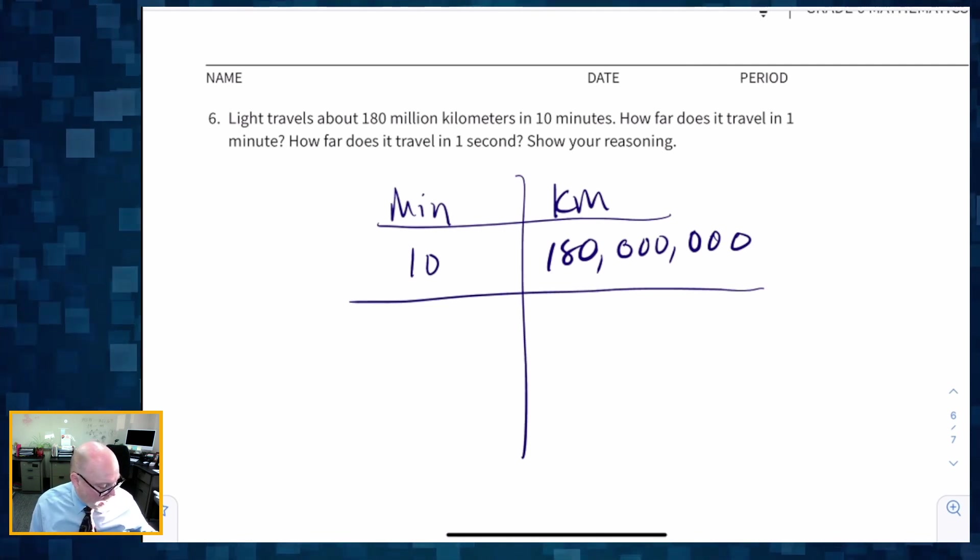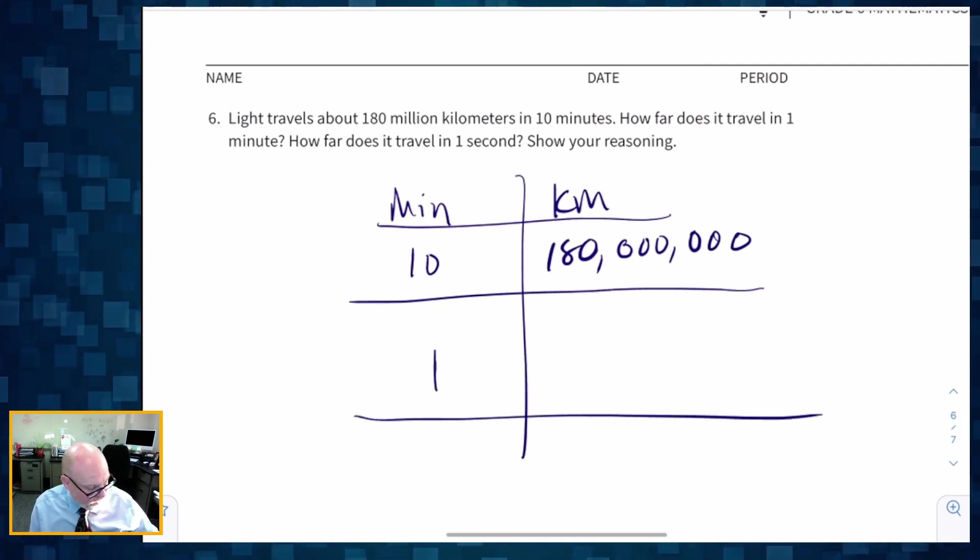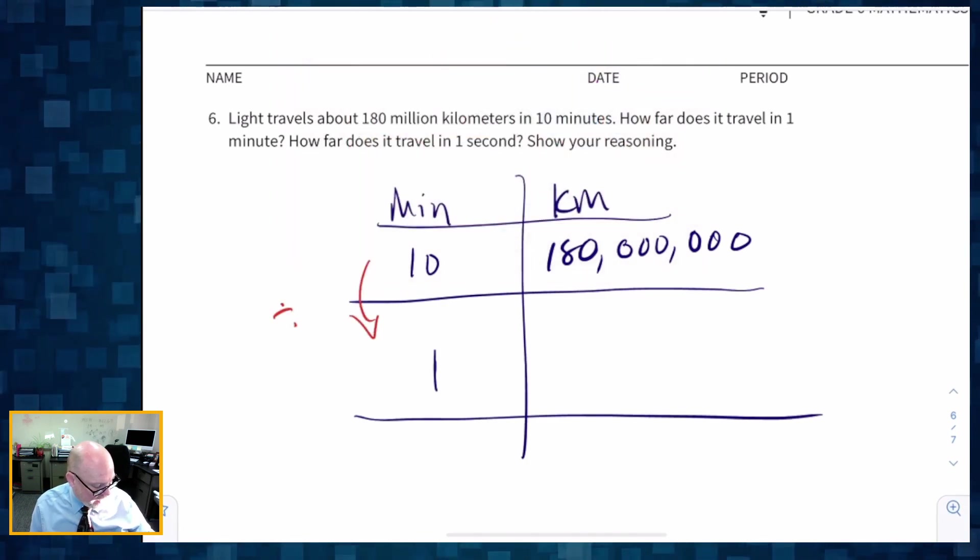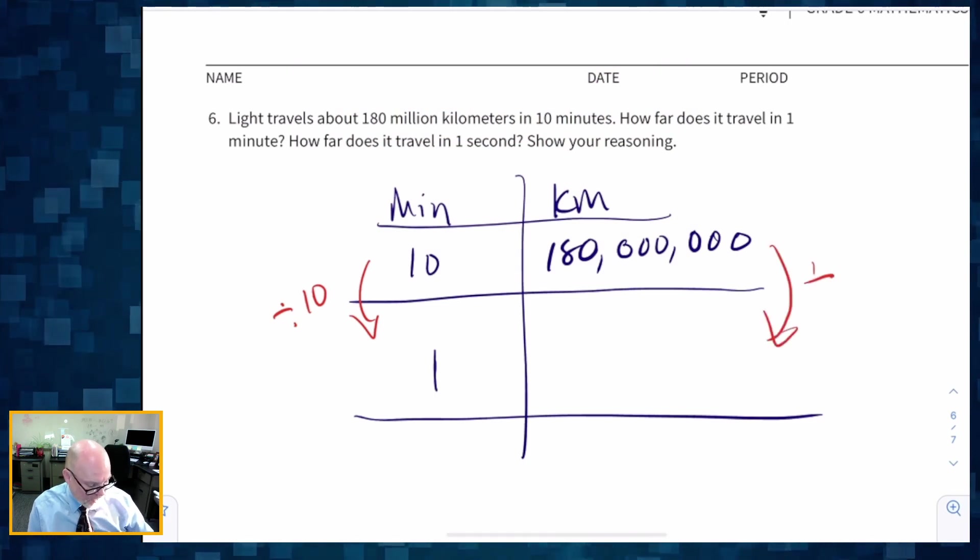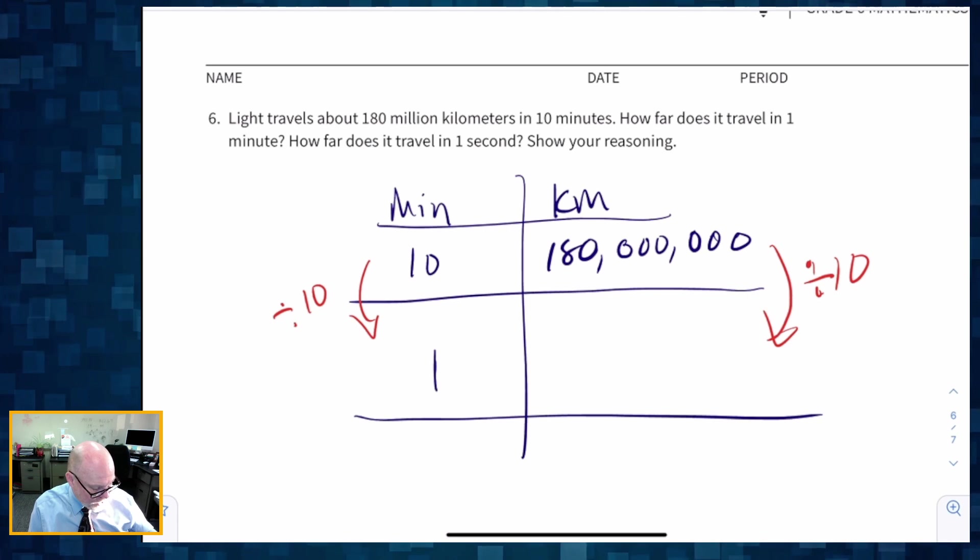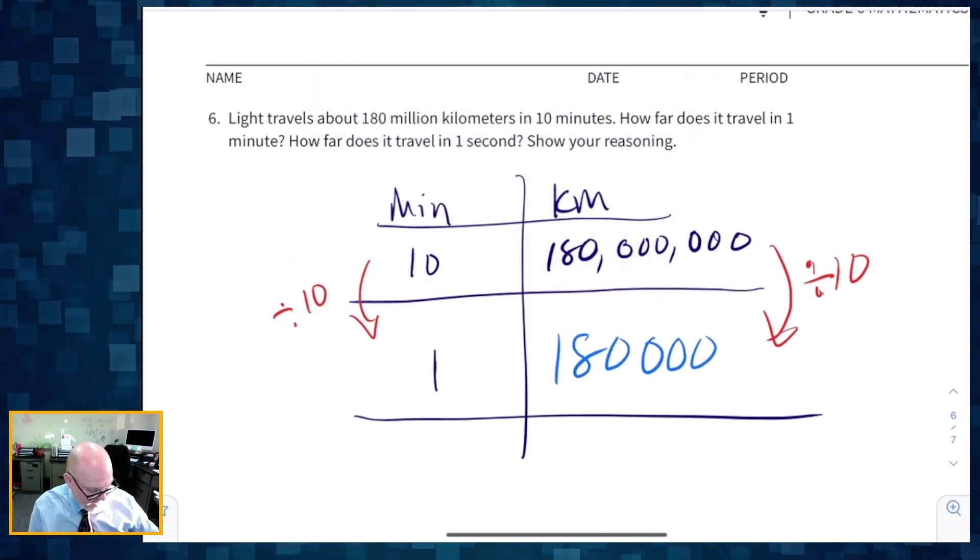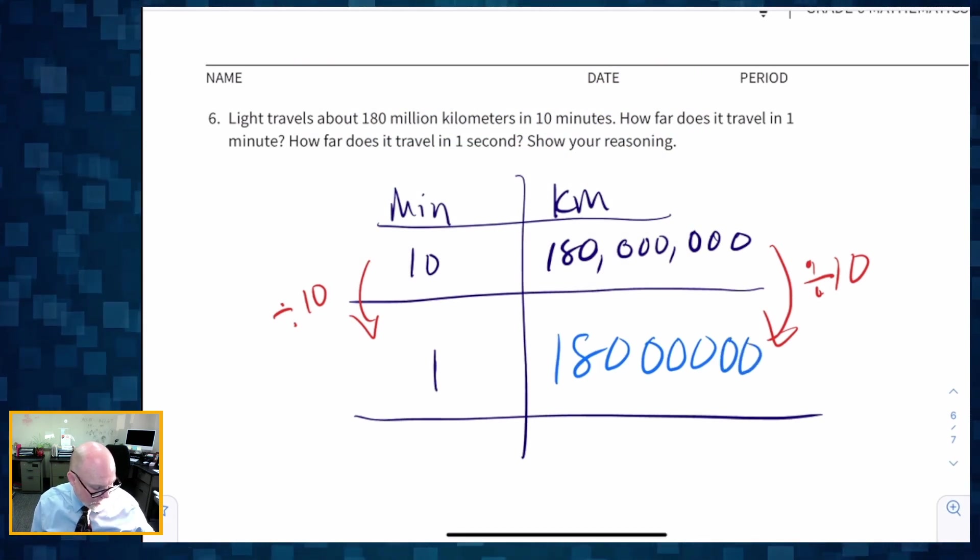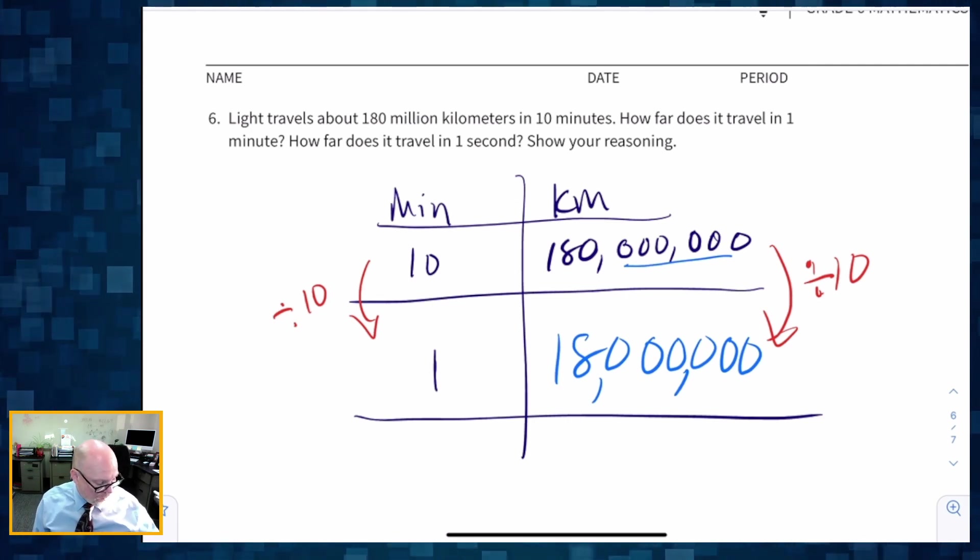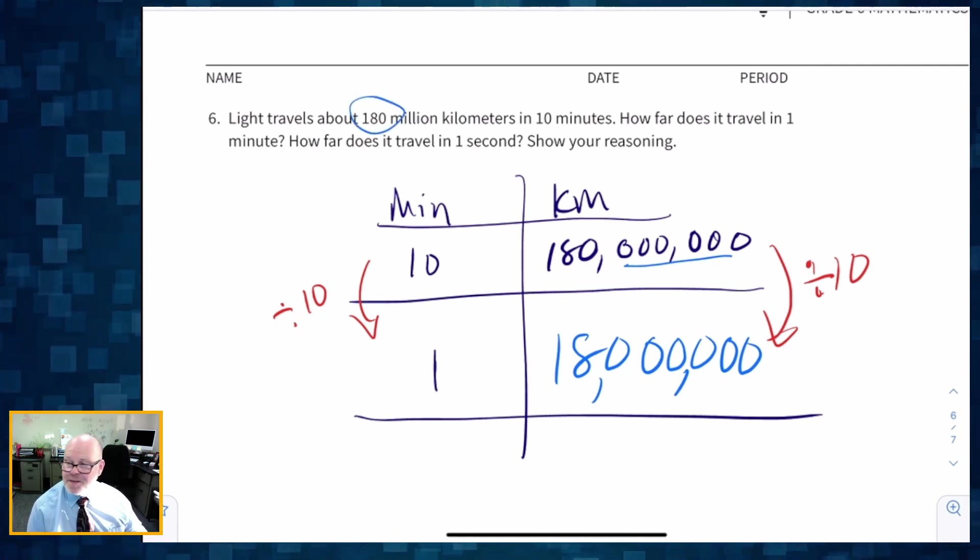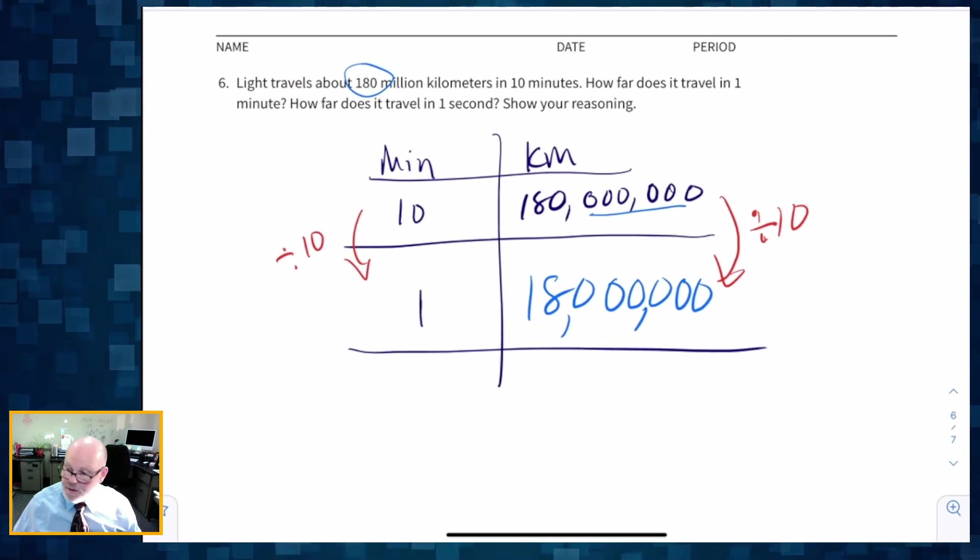And I want to know how far does it travel in 1 minute. Well, I need to divide that by 10. Divide 10 by 10 to get 1. So I'm going to divide this by 10, which is really easy. All we have to do is chop off one of those zeros. So we're going to end up with, instead of six zeros at the end, we're going to have 180. And then at the end, instead of having six zeros, we're going to have five zeros. And so put in our commas, and we get 18 million, which makes sense. Because really, all we needed to do is take that 180, chop off a zero, and there we go.